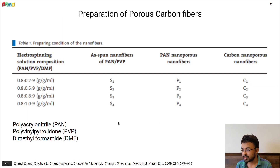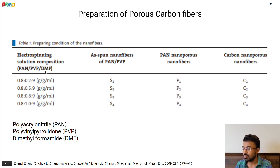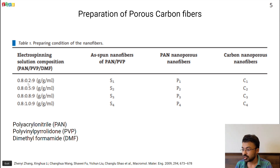To explain the further process after electrospinning, I have taken this experiment from a paper in which polyacrylonitrile (PAN), polyvinylpyrrolidone (PVP), and dimethylformamide (DMF) are used. PAN is the precursor from which the carbon fiber will be generated. PVP is used to generate pores in the carbon fiber, and DMF is the solvent in which PAN and PVP are dissolved. The concentration of PAN and DMF is kept constant at 0.8 grams and 9 milliliters respectively, but the concentration of PVP is increased from 0.2 to 1 gram.